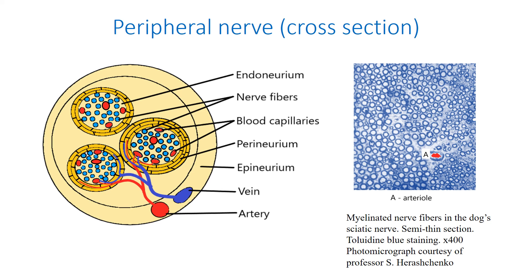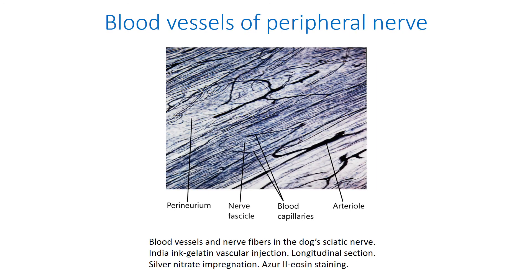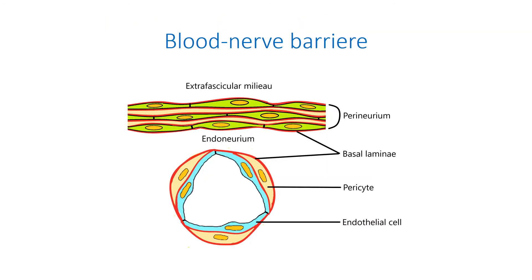Arteries supplying the nerves pass into the epineurium. The branches of arteries, which are called arterioles, penetrate the peri- and endoneurium, forming a hemomicrocirculatory bed. Endoneurial capillaries form a blood-nerve barrier, isolating the endoneurium from the circulating blood and preventing uncontrollable molecule and ion leakage from the circulatory system to the peripheral nerve.